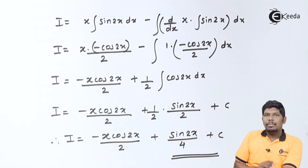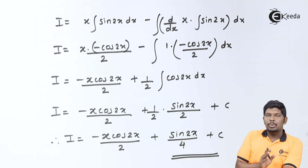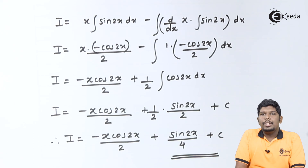Remember friends, whenever you solve integration by parts, you just need to arrange the two given functions in the form of LIATE. The one which comes first, arrange it as u, and the second one will be v. I hope you have understood this problem. Thank you for watching this video. Stay tuned with Ikeda and subscribe to Ikeda.